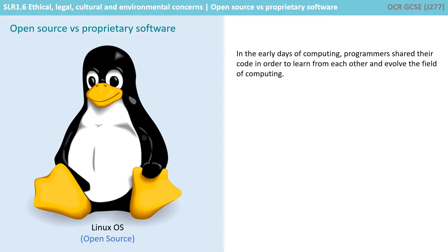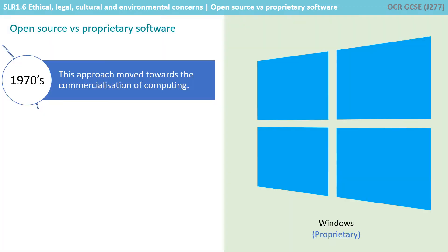In the early days of computing, programmers shared their code in order to learn from each other and evolve the field of computer science. Eventually, this approach moved towards commercialization of software in the 1970s.